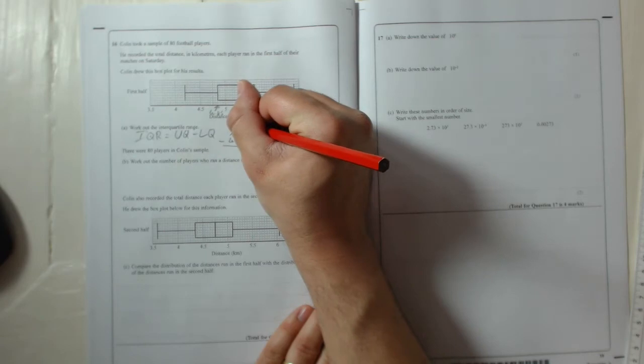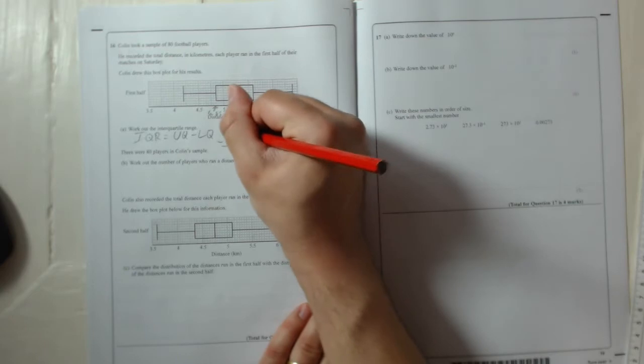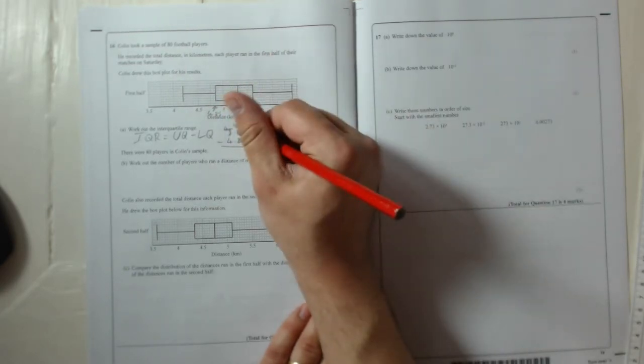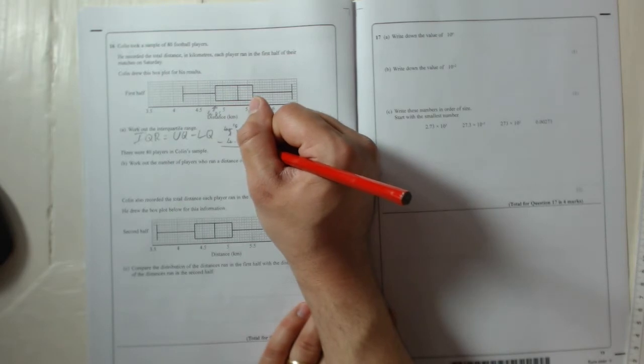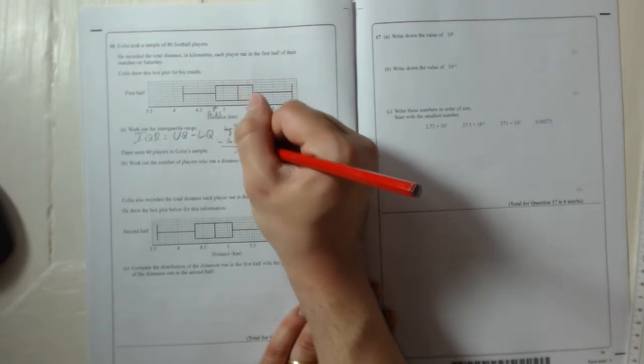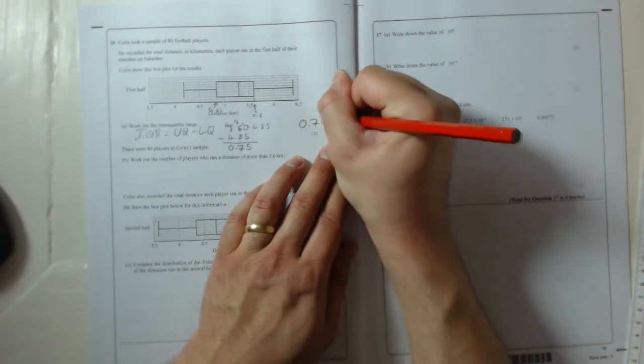That becomes 5 and that becomes 10. 10 take away 5 is 5. 5 take away 8, again you can't do, so that becomes 4, that becomes 1. So 15 take away 8 is 7. Point stays in line. 4 take away 4 is 0. So interquartile range is 0.75.